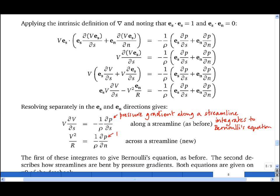And we get another expression for the pressure gradient across a streamline, where R is the radius of curvature of the streamline. And you can see that this expression is saying that the pressure gradient across the streamline causes a centripetal acceleration.